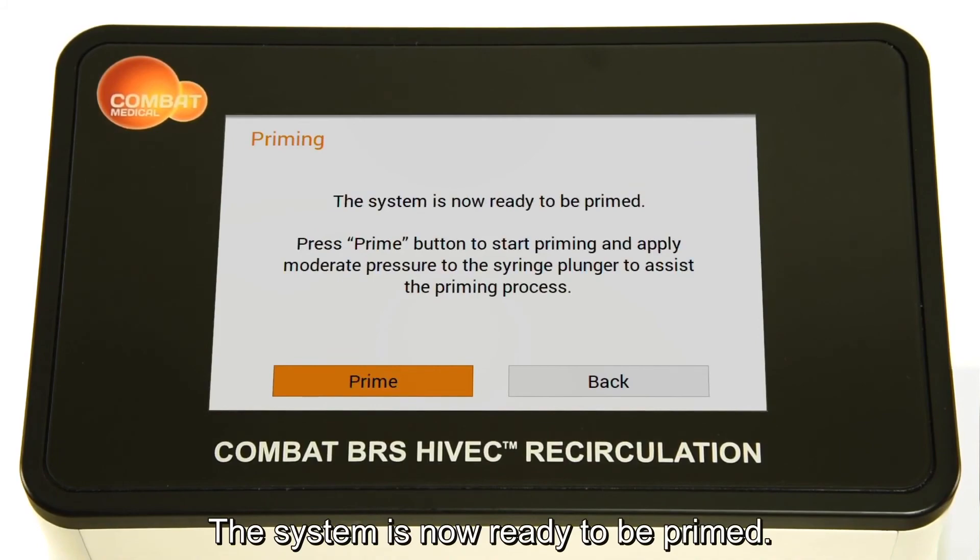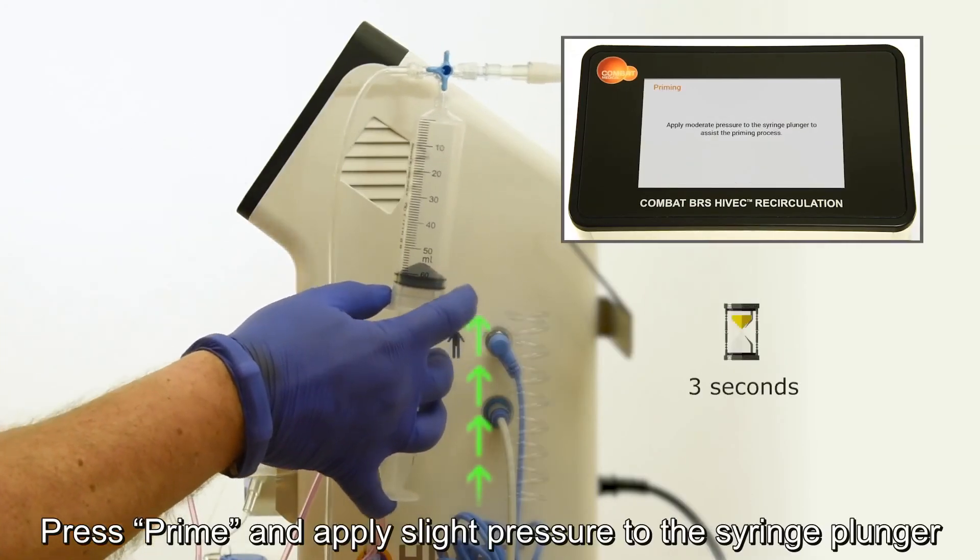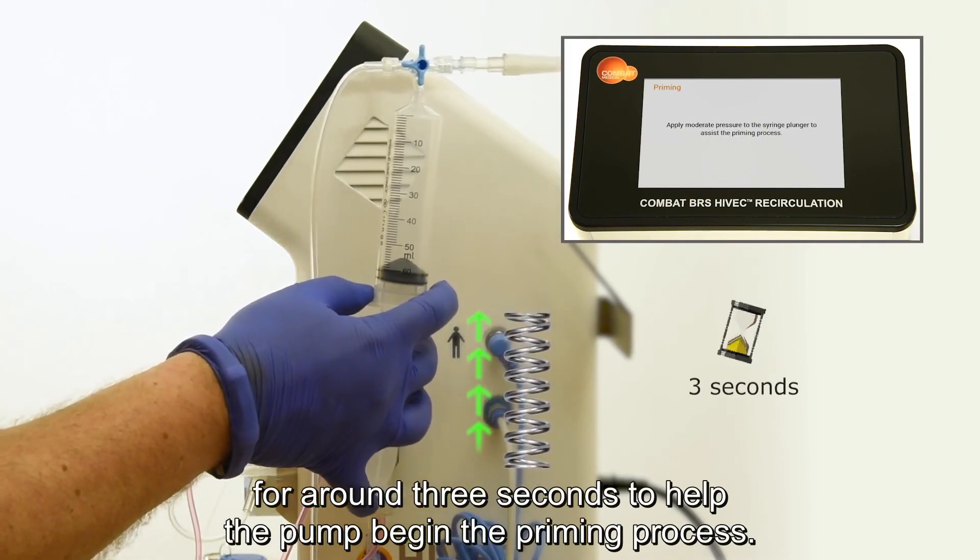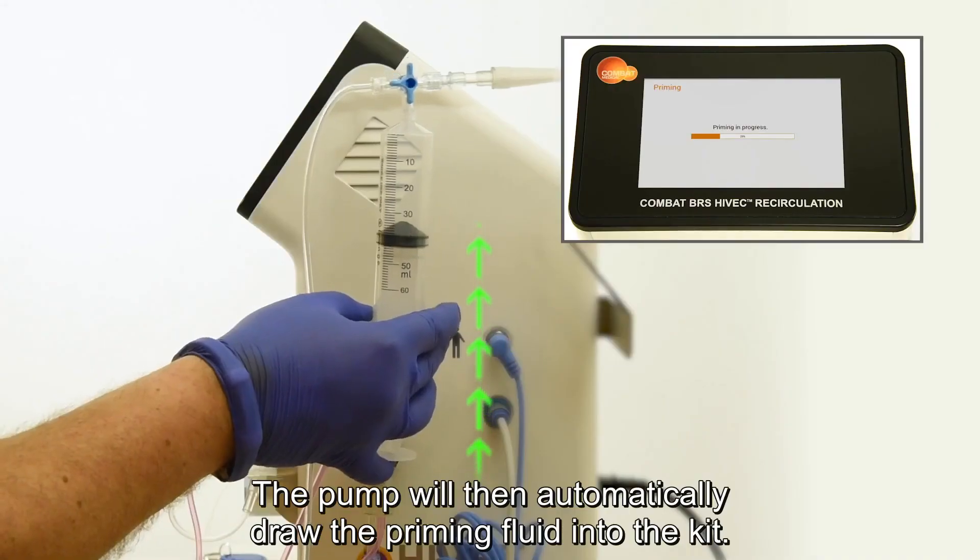The system is now ready to be primed. Press prime and apply slight pressure to the syringe plunger for around three seconds to help the pump begin the priming process. The pump will then automatically draw the priming fluid into the kit.